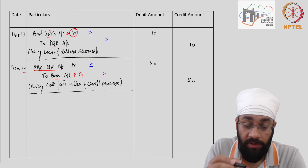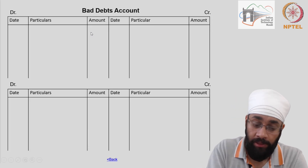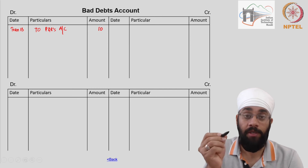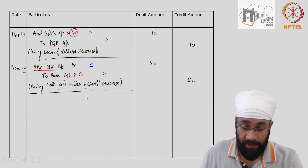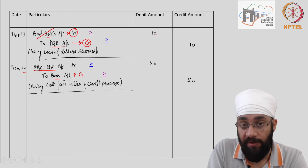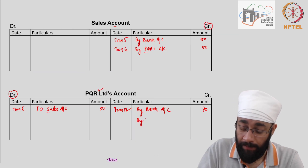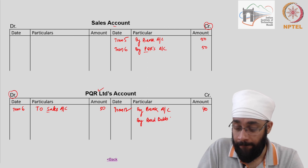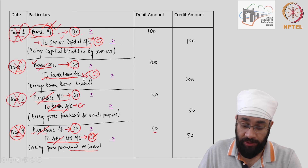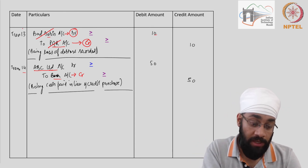Two more to go. Transaction 13: Bad debts account is debited — open a new bad debts account, go to the debit side, and write 'To PQR, 10'. I have the bad debts account here — 'To PQR's Account, 10', transaction 13. Going back — bad debts posting is done. PQR's account is being credited, so I go to the credit side and write the name of the other account — 'By Bad Debts, 10', transaction 13. Posting complete for transaction 13.